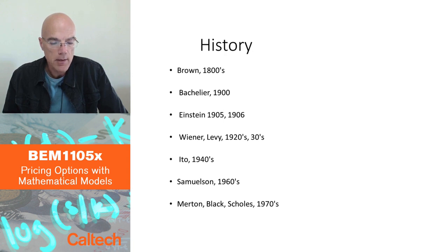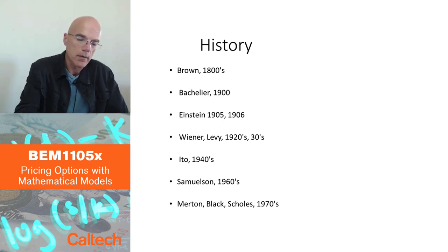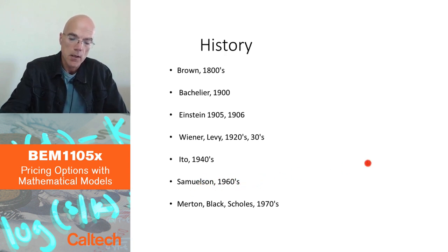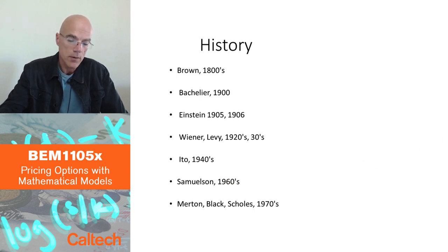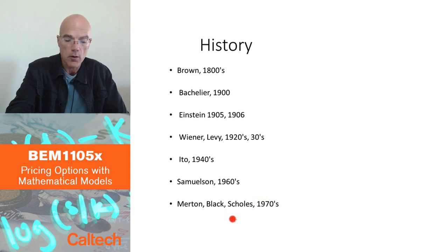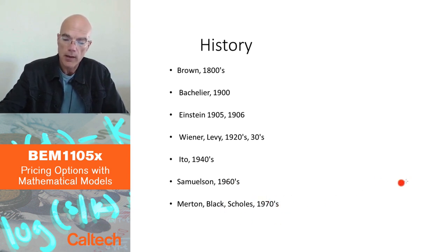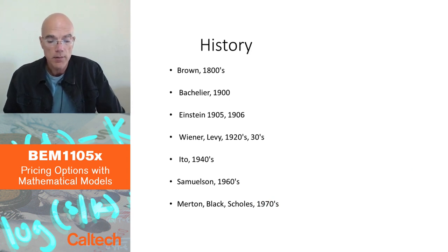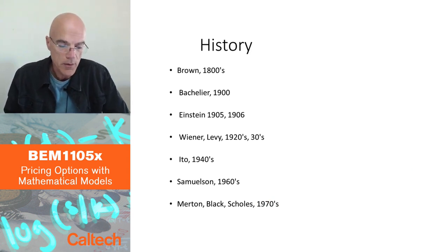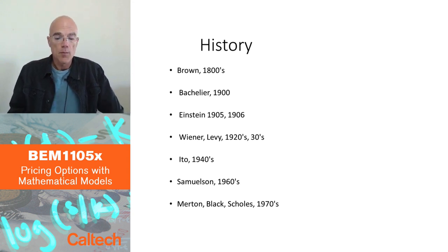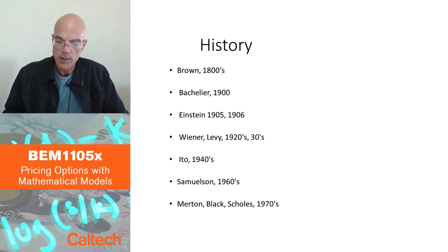It was popularized in economics by late Nobel Prize winner Paul Samuelson, a great American economist, in the 60s. Then the option pricing theory using that model was done by Merton and Black and Scholes in the 70s, and Scholes and Merton got the Nobel Prize for it. Black had died before that, so otherwise he would have gotten the Nobel Prize together with Merton and Scholes. These are the main names, at least up to the 70s, behind the model.